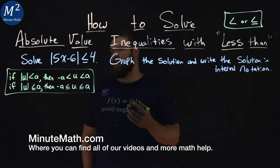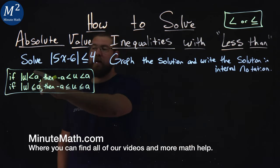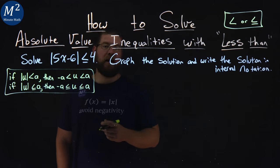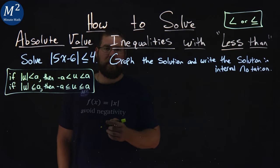If you recall from our previous video, we had rules for absolute value inequalities with less than. If absolute value of u is less than a, then negative a is less than u, which is less than a. And a very similar thing happens with less than or equal to—just swap the less than signs.